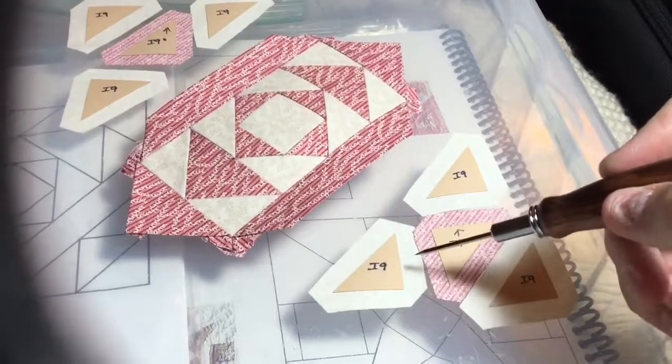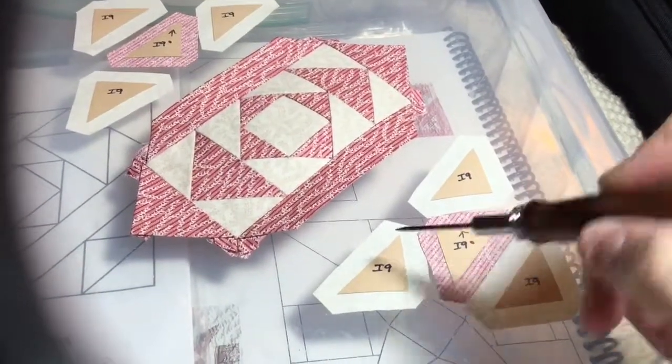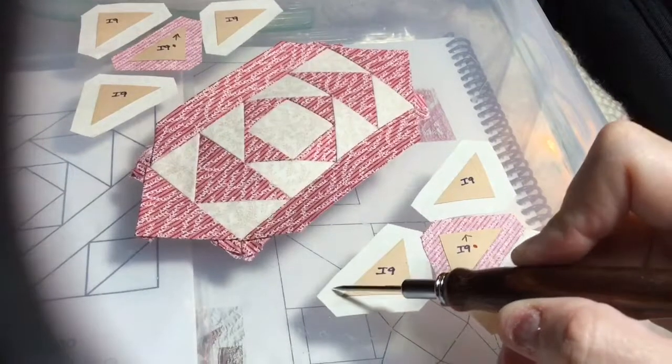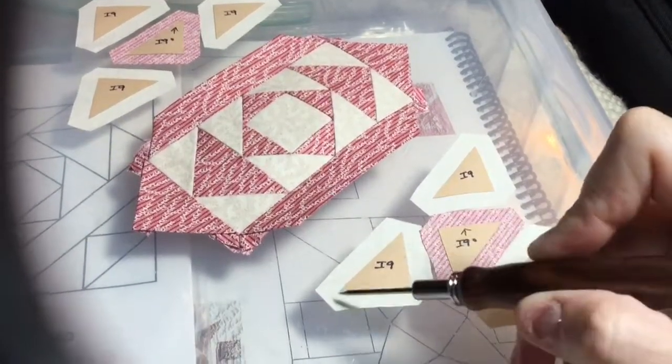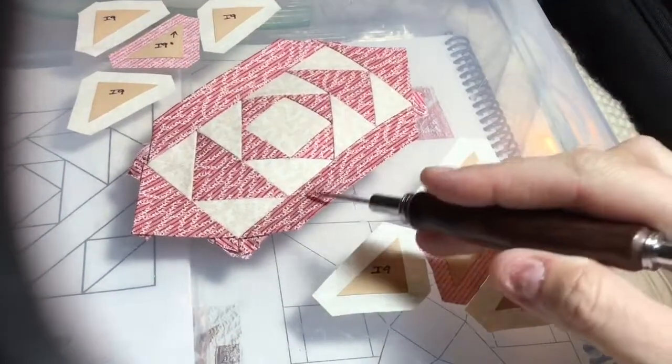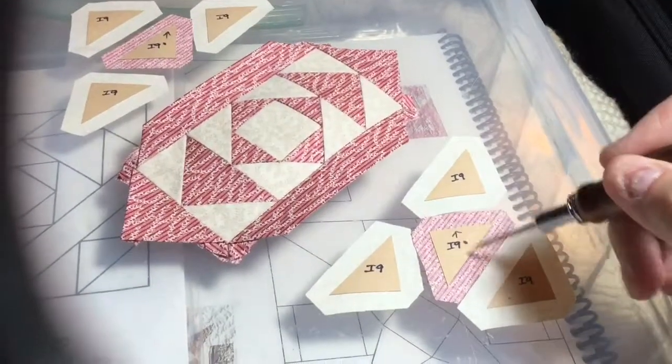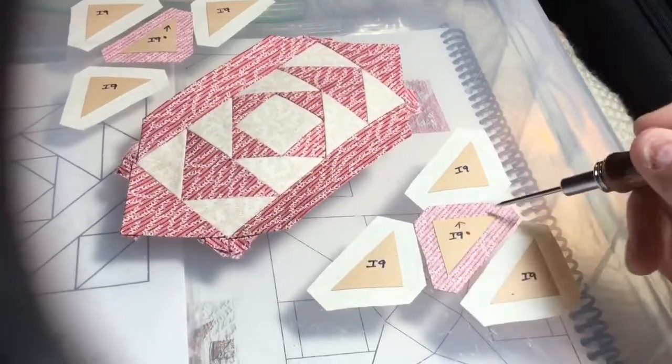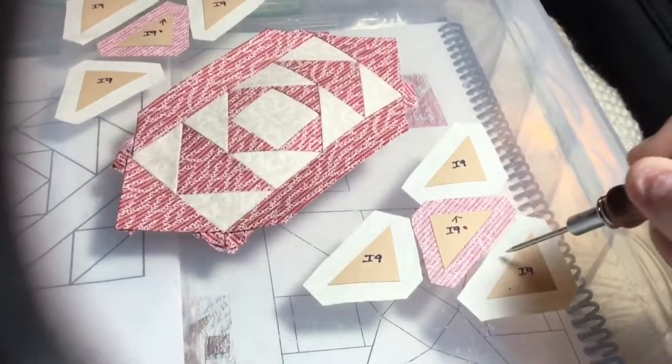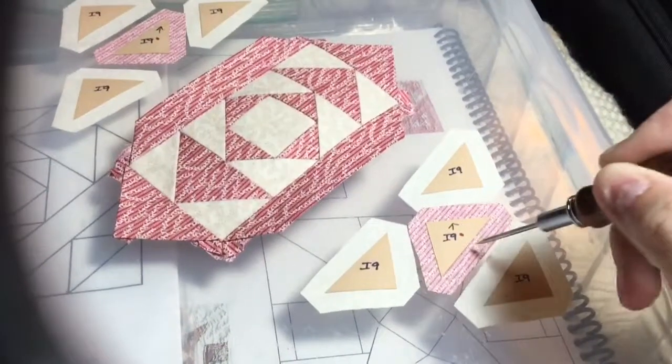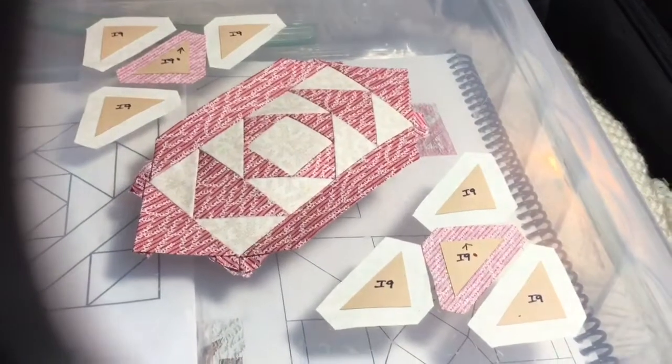I am going to baste these on this principle: I'm going to baste this one first, then these two, and then the tags will be going towards my strip here. This one I'm going to baste these two first and then this one, so that it doesn't interfere with the tags from this one. I'll get to basting and assembling.